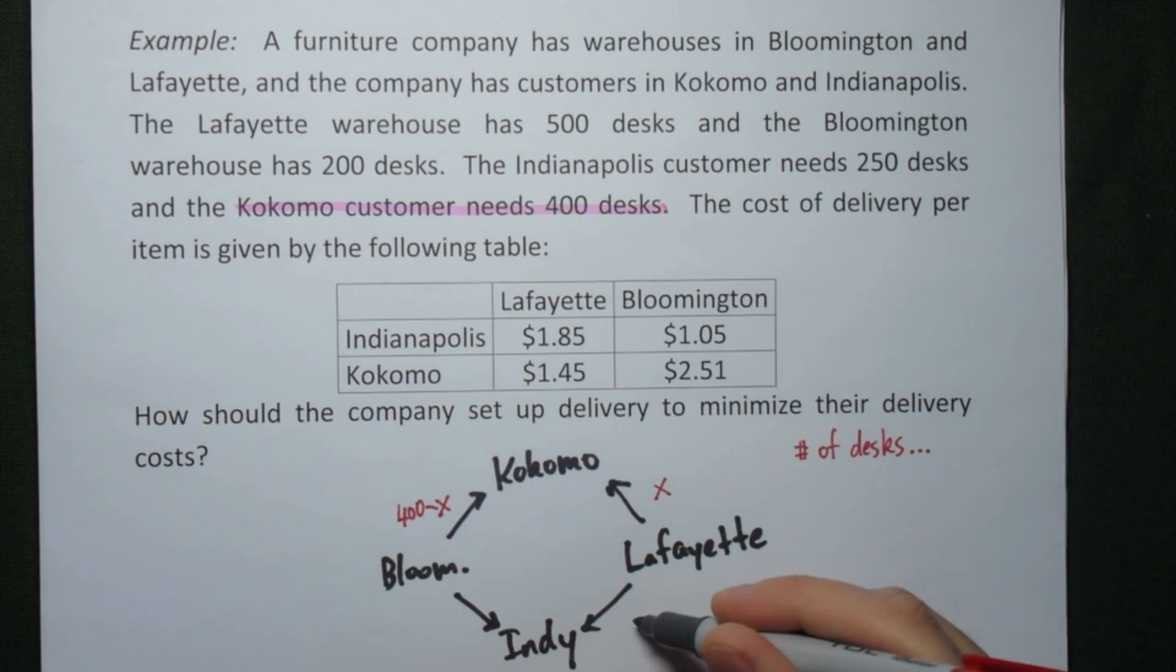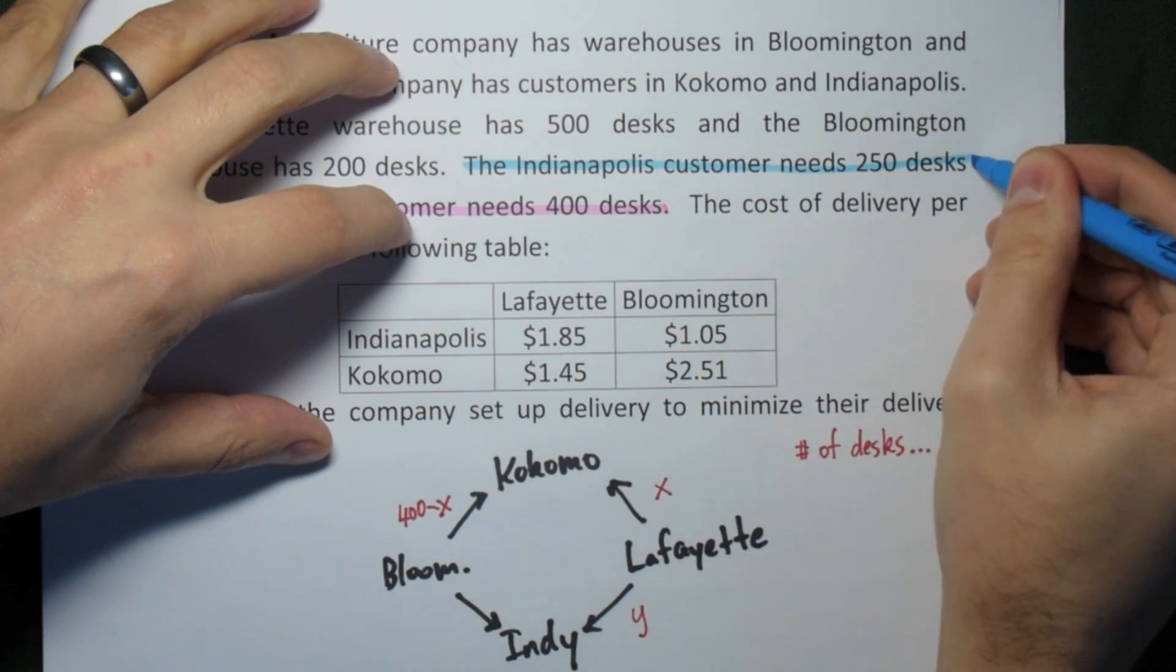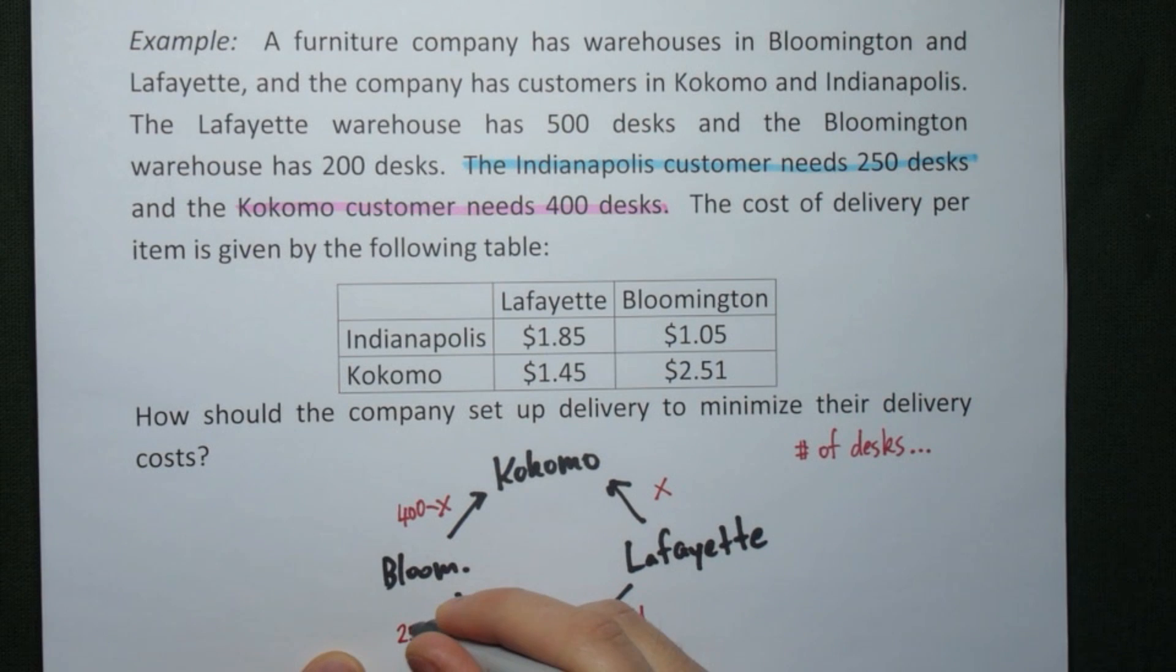We can do the same thing for the other destination. If y is the amount of desks we're shipping from Lafayette to Indianapolis, then since the customer needs 250 desks, we'll have 250 minus y to ship from Bloomington to Indianapolis. Now that we have our four variables, some of which depend on the others, we can begin setting up our constraints.